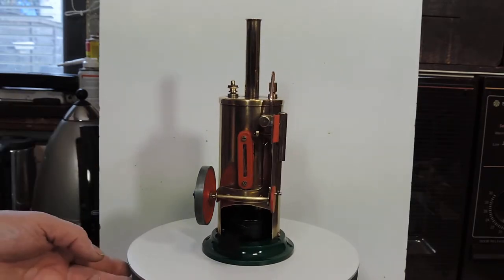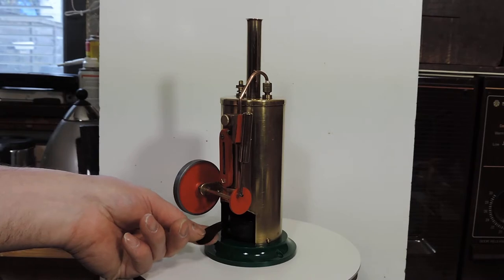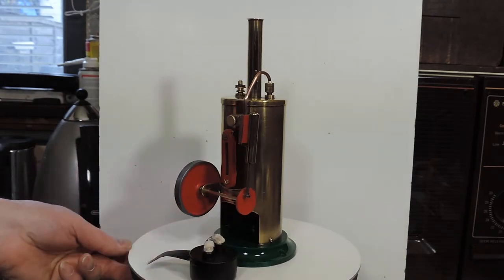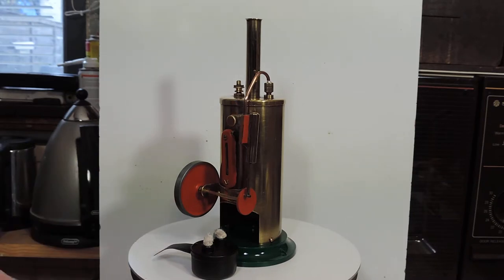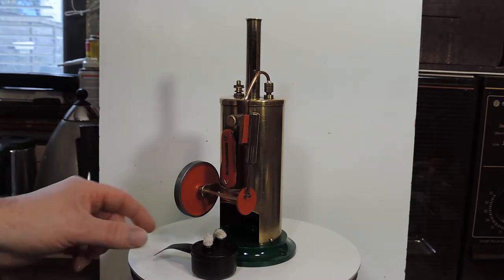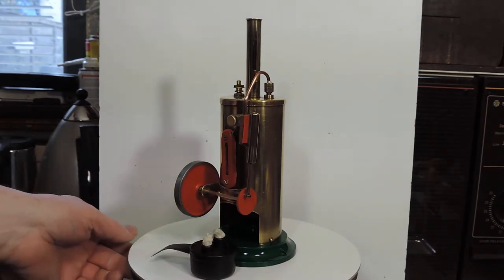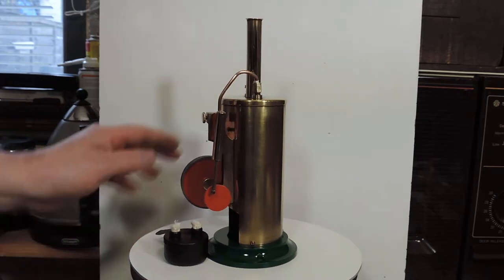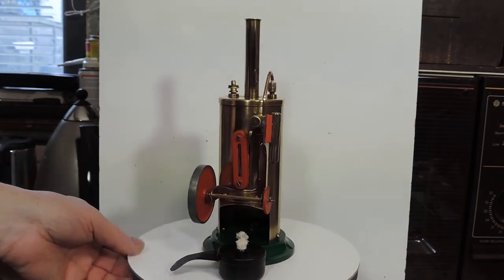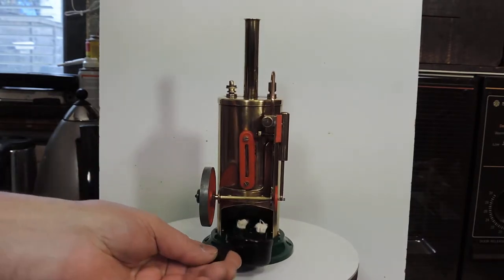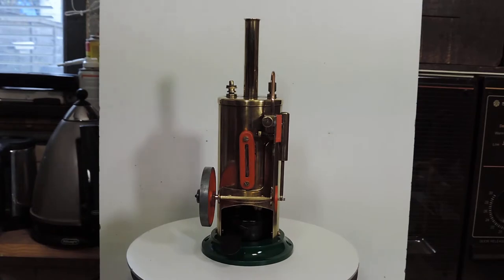The red is a Humbrol enamel, which is very good to use on steam engines, as obviously it's quite hard-wearing. The burner has had new wicks and a coat of paint. That was also etched primed. So it's all nice and freely moving. So hopefully we're good to go. So the next job is to see whether it actually runs.